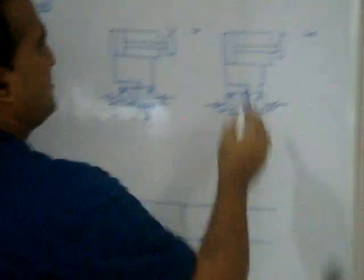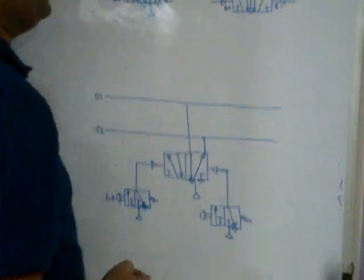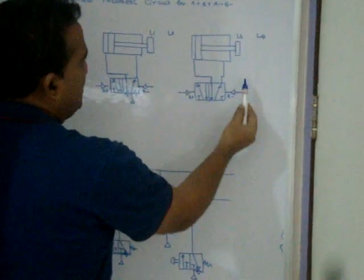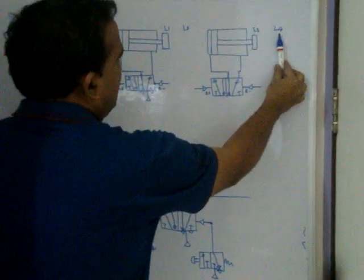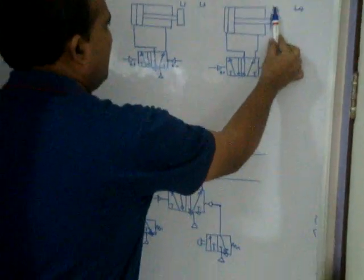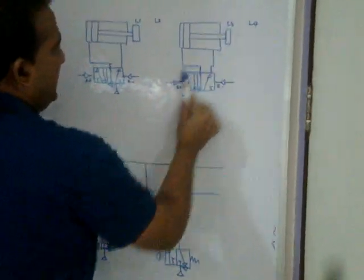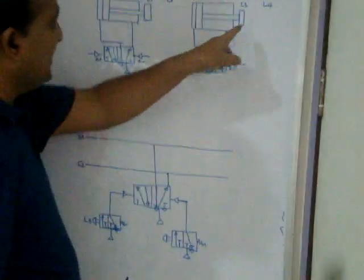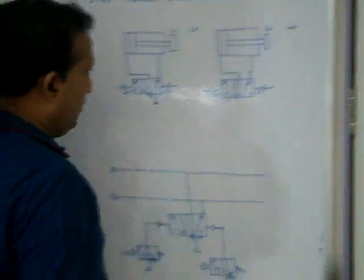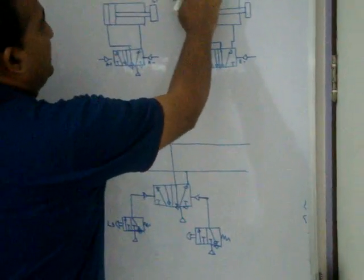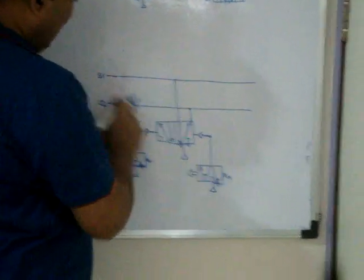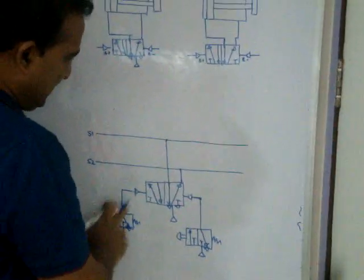When L3 is on, A plus should happen. Presently S1 is off. If L3 is activated, S1 turns on — so directly A plus is triggered. When A plus happens, the piston moves to L2.